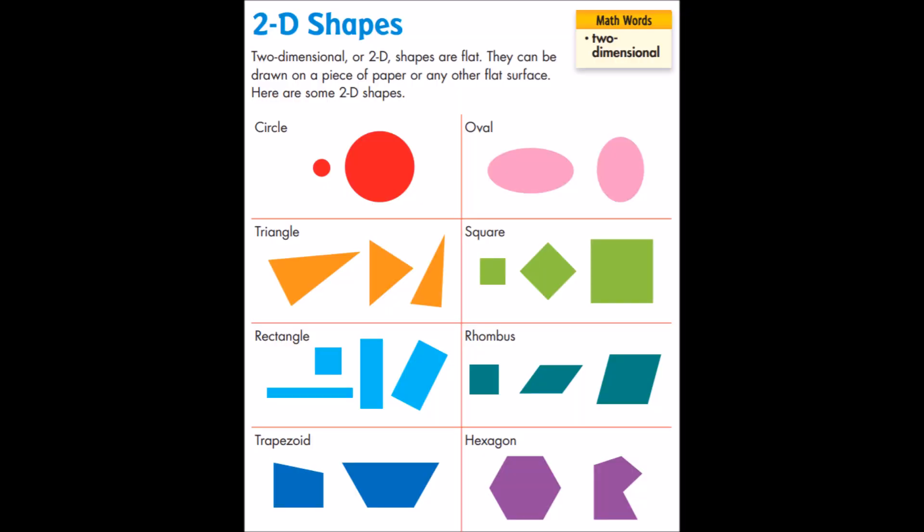Some things that we'll be looking for on our geometry walk are 2D shapes. 2D stands for two-dimensional and these are shapes that are flat. Here are some examples: circle, oval, triangle, square, rectangle, rhombus, trapezoid, and hexagon. I would also add two more common 2D shapes: pentagons which have five sides and octagons which have eight sides.